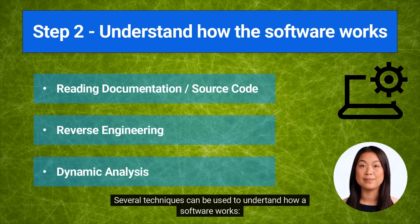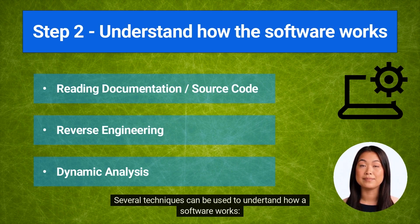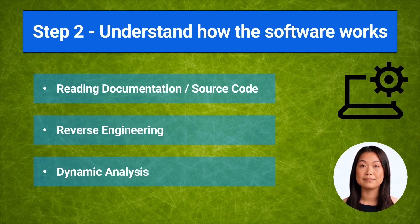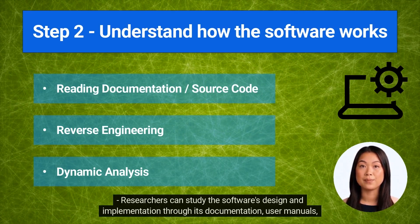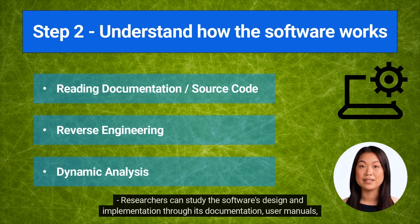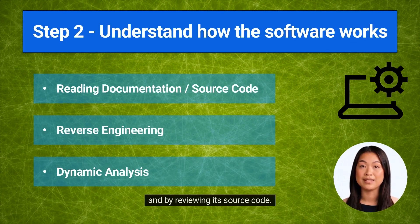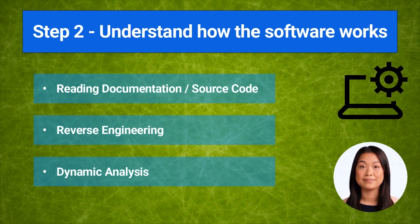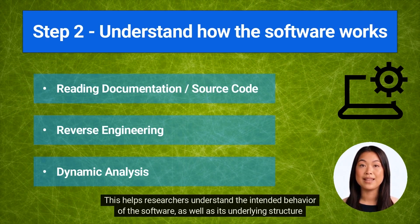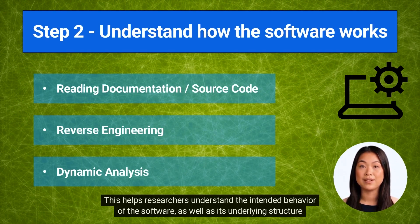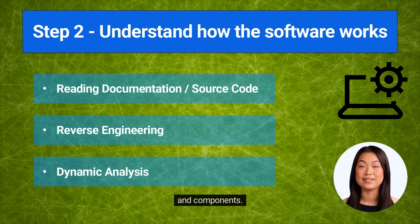Several techniques can be used to understand how a software works. Researchers can study the software's design and implementation through its documentation, user manuals, and by reviewing its source code. This helps researchers understand the intended behavior of the software, as well as its underlying structure and components.